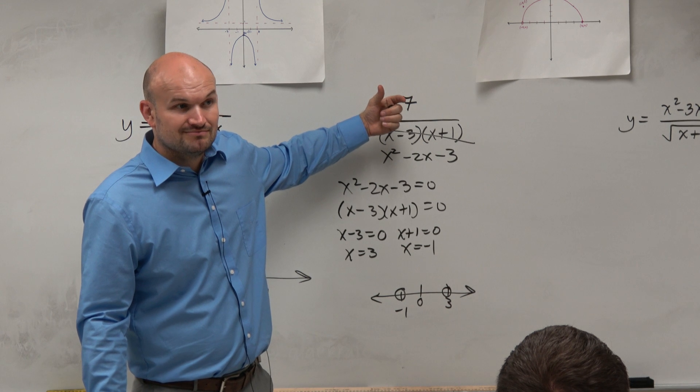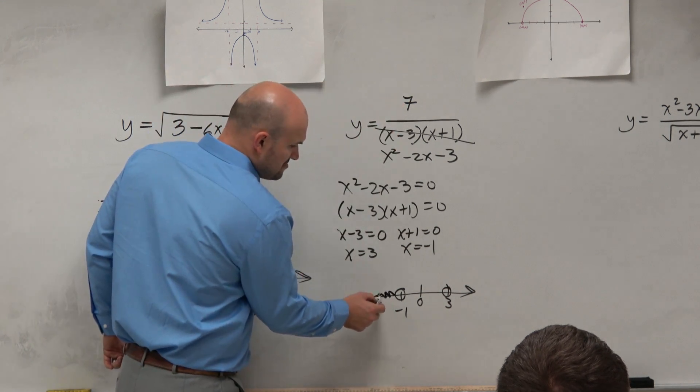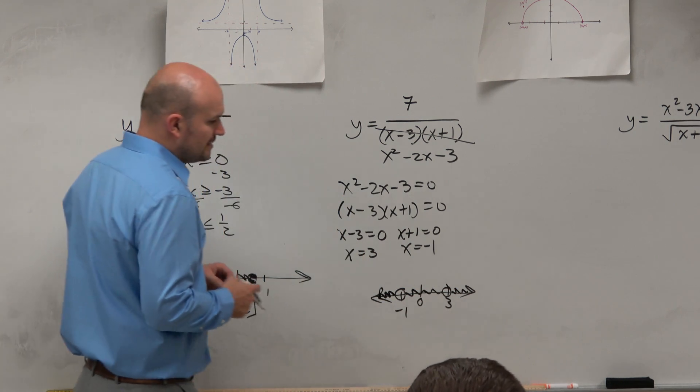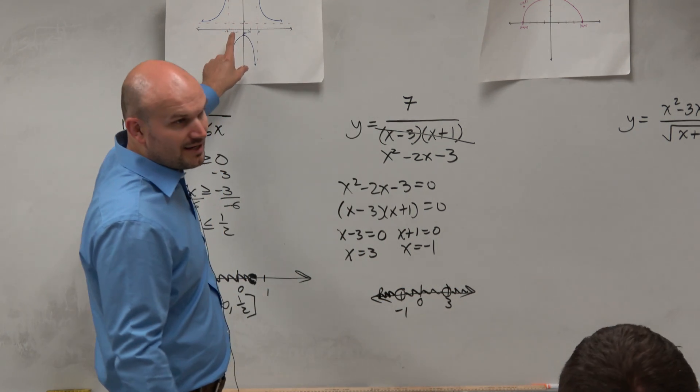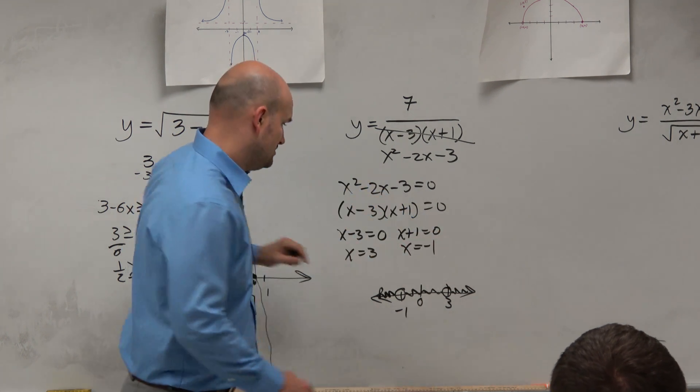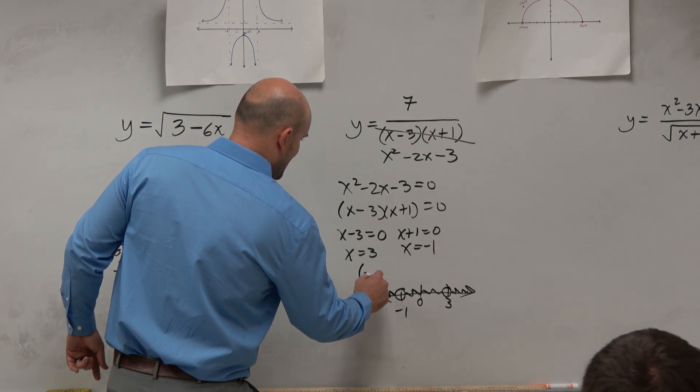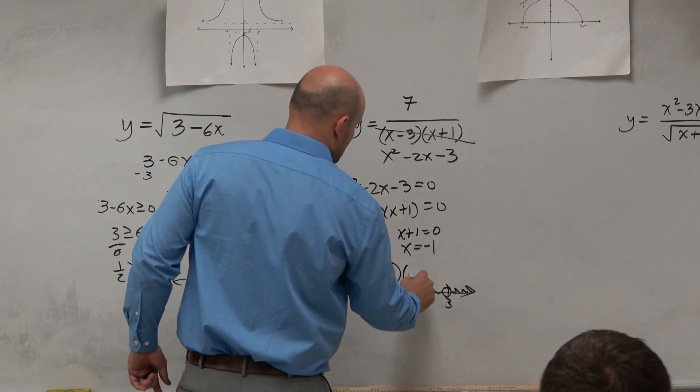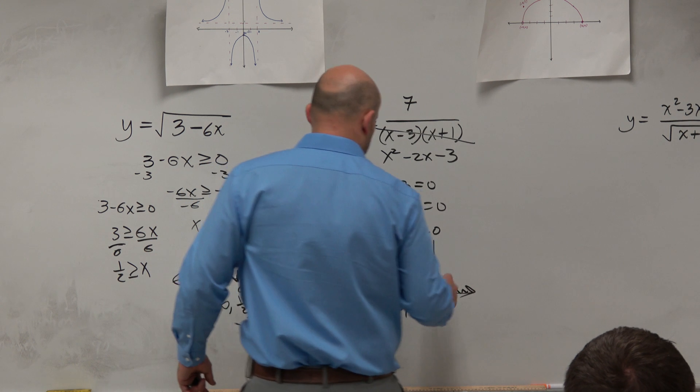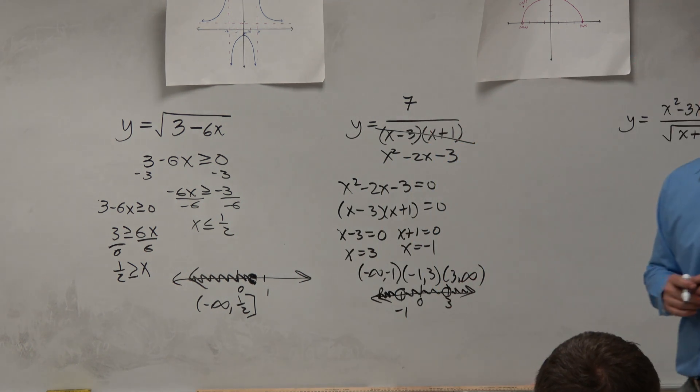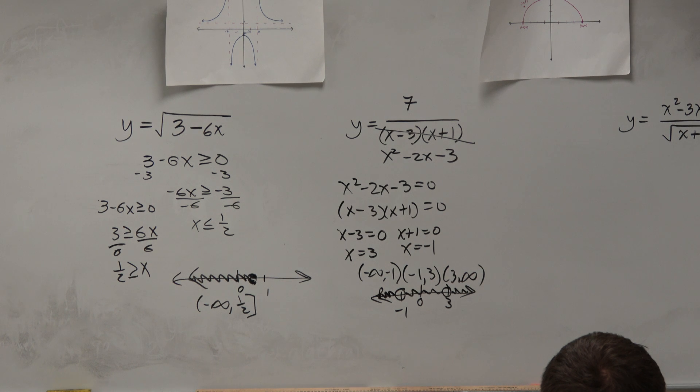Is there any other numbers that are undefined? Nope. So guess what? Everything else. So when you're writing the domain, though, just like how we did over here, writing the domain, just write the domain of each interval. So we could say the domain is from negative infinity to negative 1, not contained. Negative 1 to 3. 3 to infinity. And there you go.